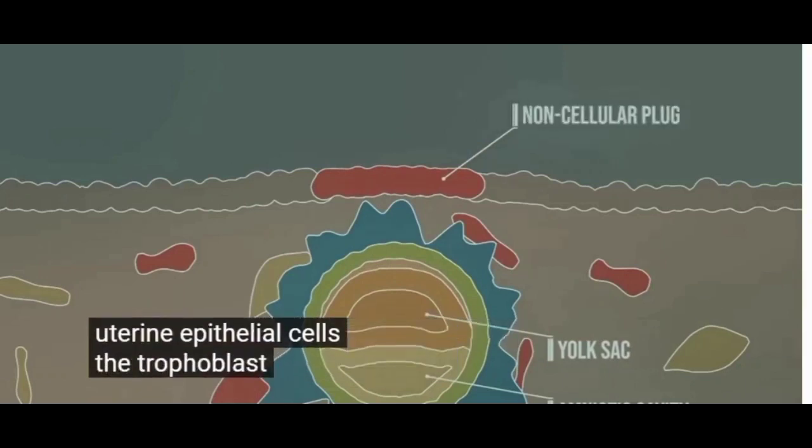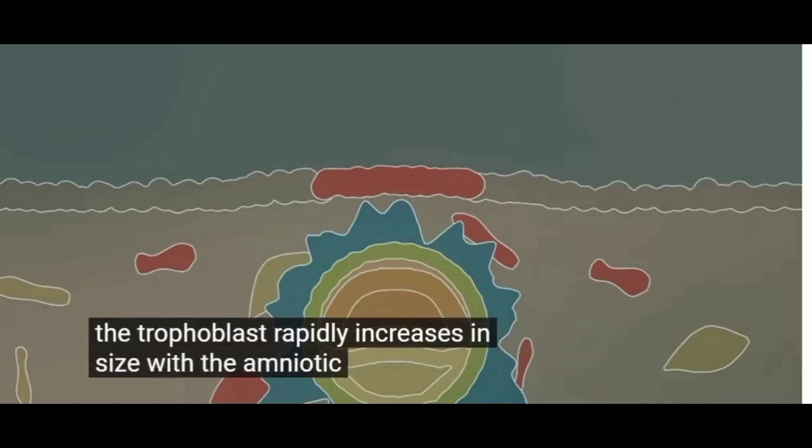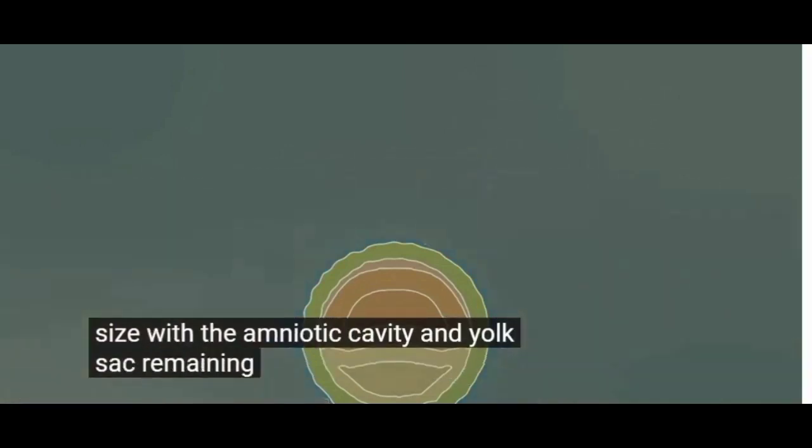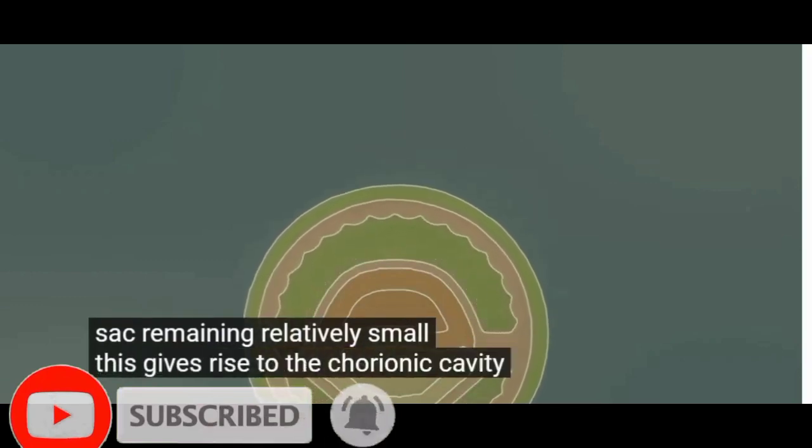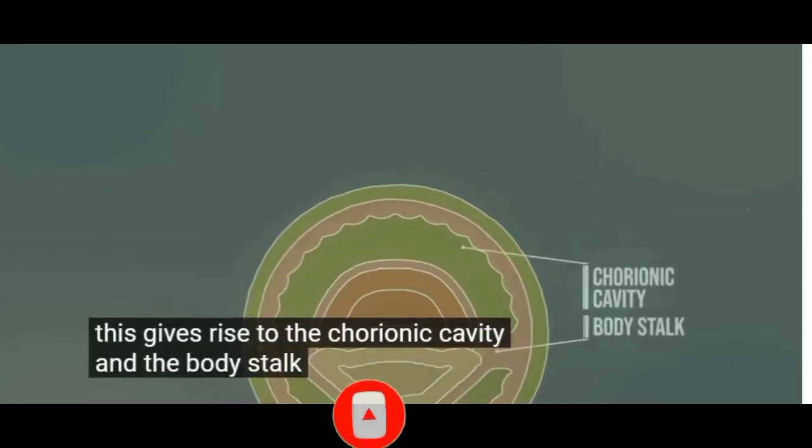The trophoblast rapidly increases in size, with the amniotic cavity and yolk sac remaining relatively small. This gives rise to the chorionic cavity and the body stalk.